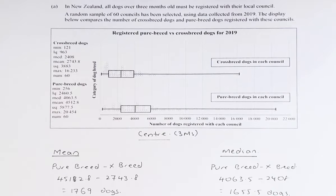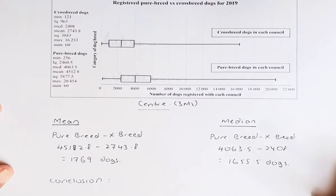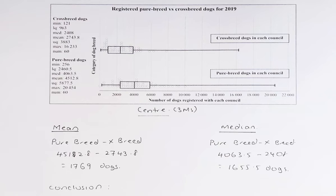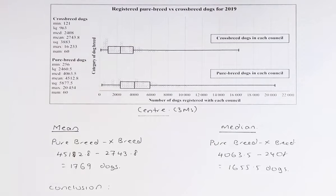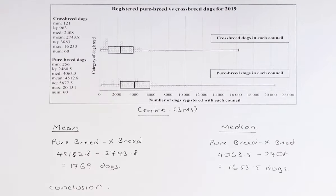The first thing to analyse is the centre. There are 3 centres: the mean, mode, and median. The mode is the centre we will not use in Level 1 analysis because mode is more useful for non-numbers.